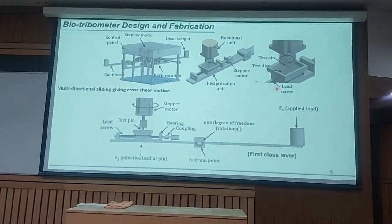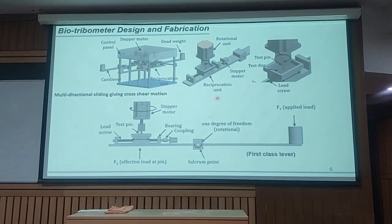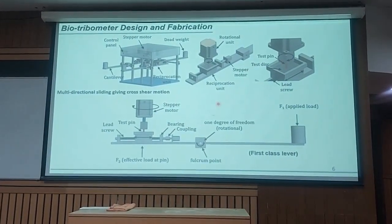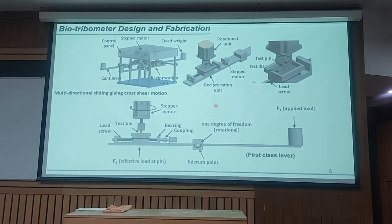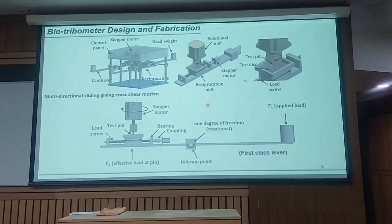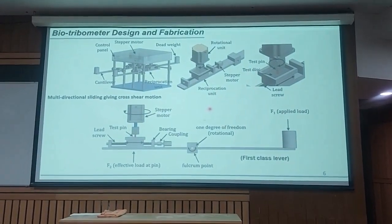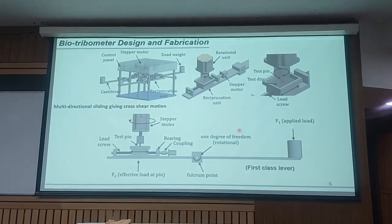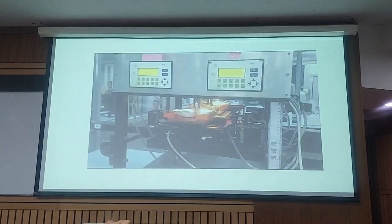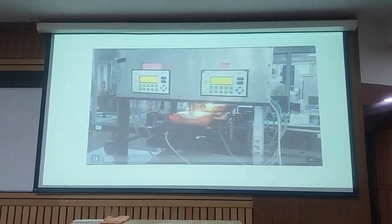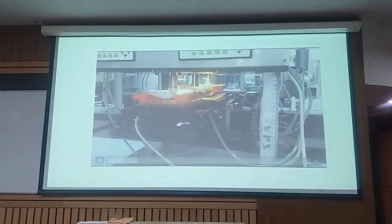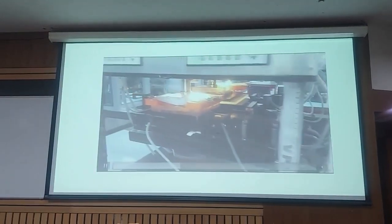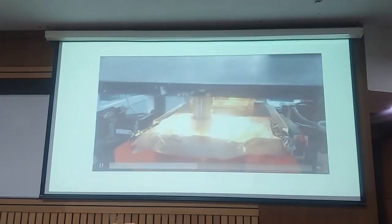One good thing our students have done is design a very new machine for biotribological research. We started from scratch, and you can see how research gives you the opportunity to design something new that actually works. This machine performs biotribological tests. In India, you can buy such a machine but it is very expensive — this is a new design. It is a multi-directional sliding setup: one element is rotating and another element is translating. It is in the lab, and you are all welcome to come and see it.